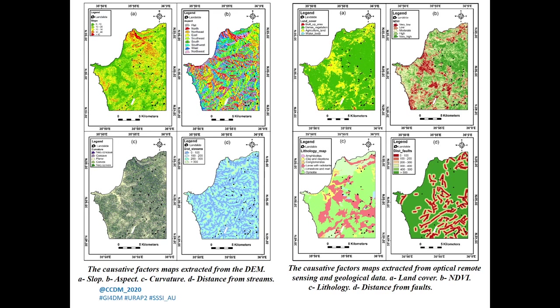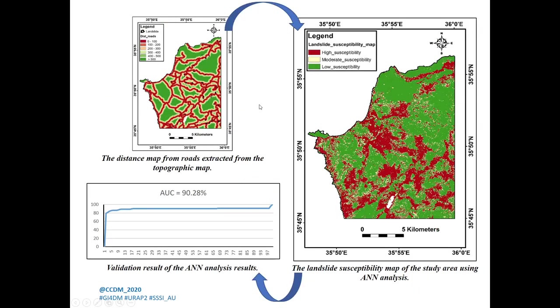The causative factor maps were created in QGIS with the same spatial extent, coordinate system, and pixel size. All nine causative factors were prepared: the slope, the aspect, the terrain curvature, the distance from the stream network, the land cover, the NDVI, the lithology, the distance from the faults, and the distance from roads.